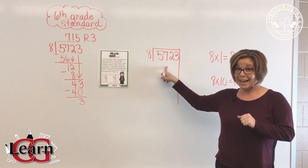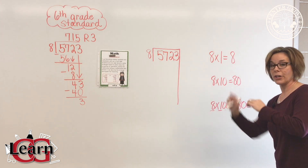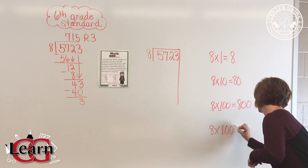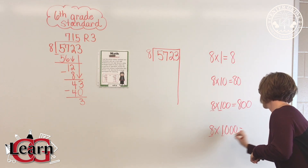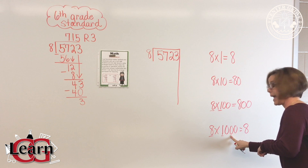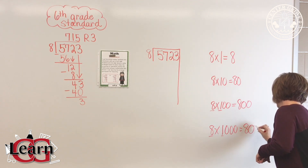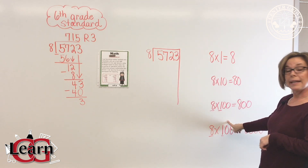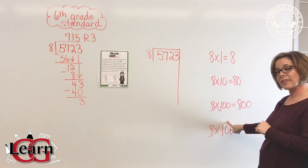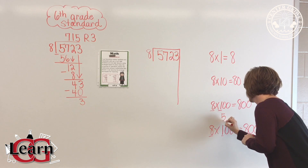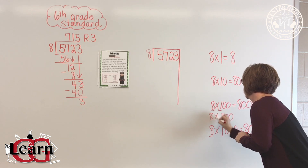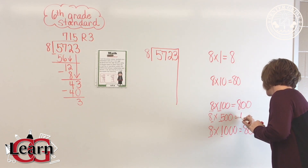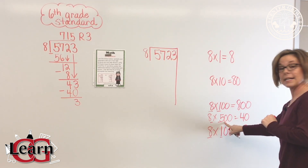I can still take out 800, so I can go further to 8 times 1,000. 8 times 1 is 8, and then I annex my three zeros. Can I take 8,000 out? No. So I'm thinking half of a thousand — half of a thousand is 500. My basic fact: 8 times 5 equals 40, and then I annex my two zeros, giving me 4,000.